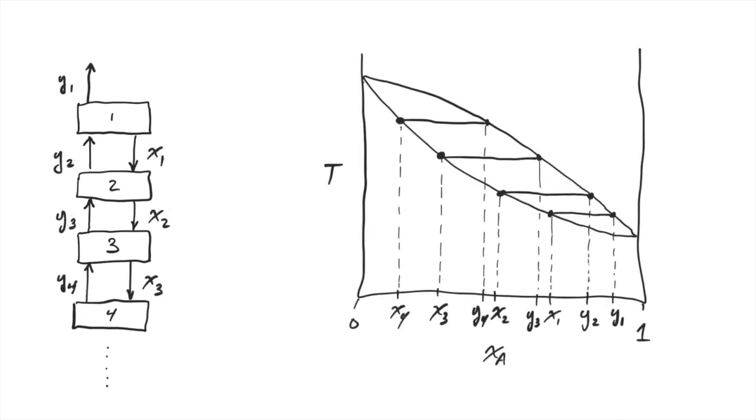We can visualize this on a T-x diagram as a series of overlapping tie lines, where each tie line represents the equilibrium on each stage. The top stage produces a gas enriched in the more volatile component, while the bottom stage produces a liquid which is enriched in the less volatile component. Thus, if we continuously feed a binary mixture someplace in the middle of the column, we can largely separate the two components.